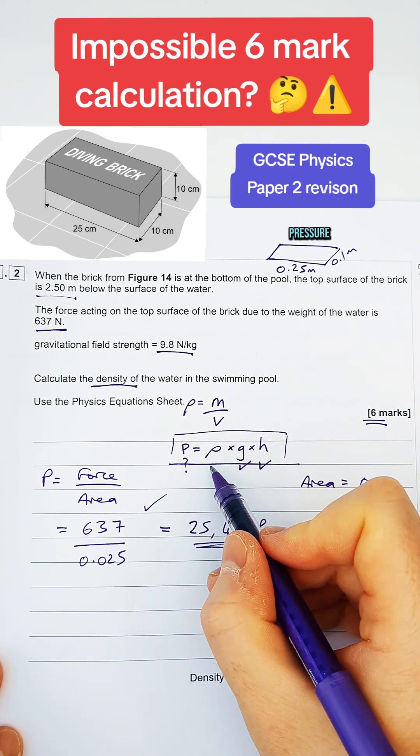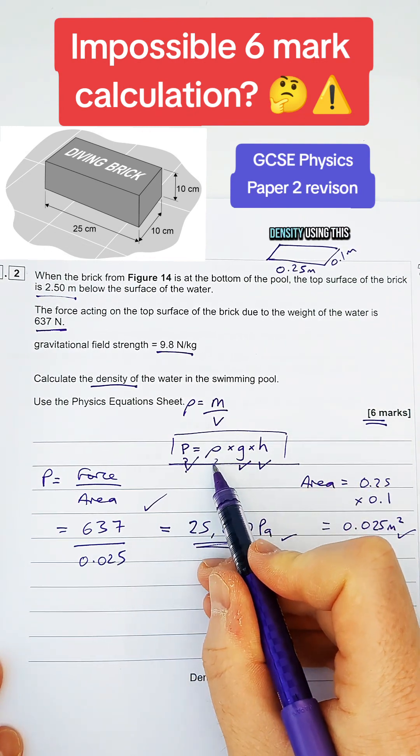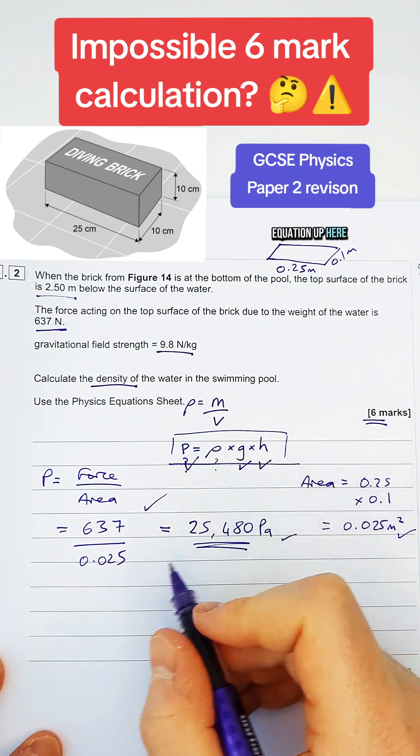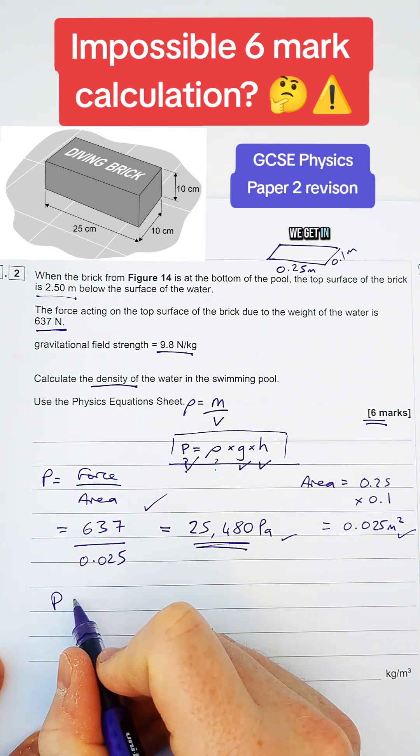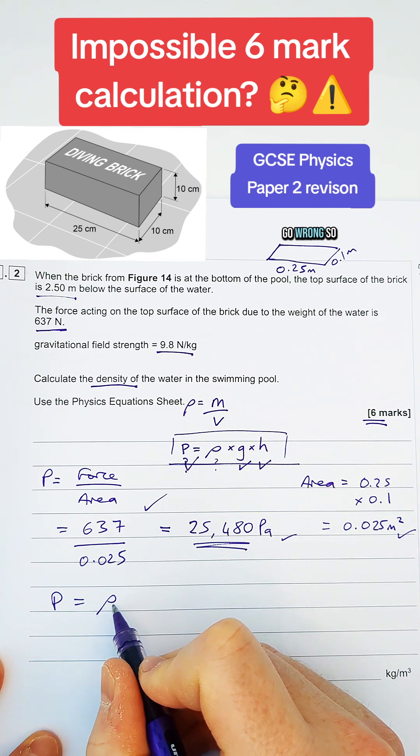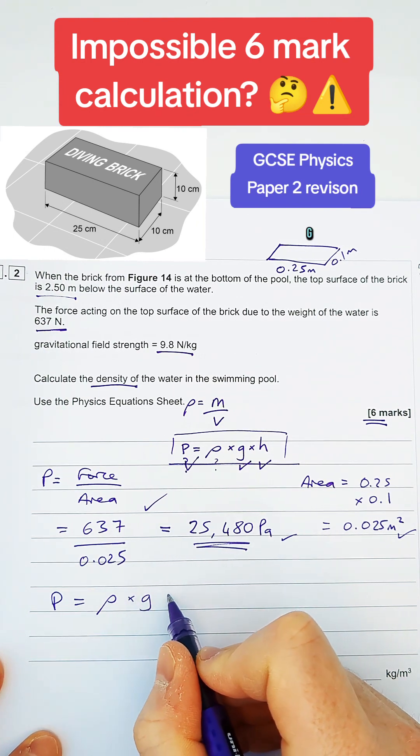But now we have got the pressure, we can then work out the density using this equation up here. So let's set it out again, just to make sure we're getting our full marks, even if we go wrong. So density times by g times by h.